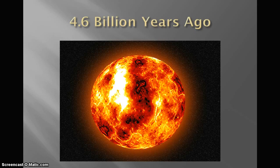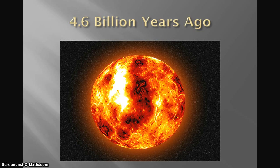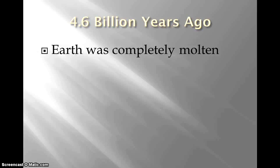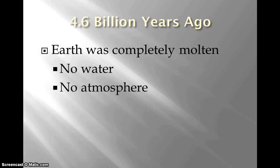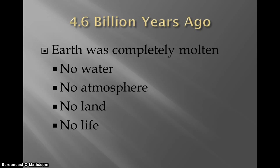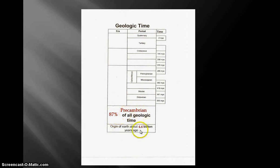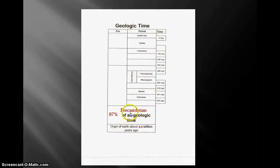The earth was created 4.6 billion years ago — you're going to need that at the bottom of your sheet, so put in 4.6 billion years ago. The earth was completely molten, very very hot. There was no water, no atmosphere, no land, no life — just like many of the planets they think about now. You should have 4.6 billion years filled in, and 87% of geological time was the Pre-Cambrian stage.